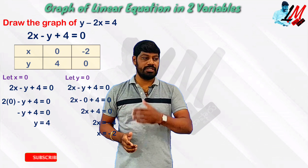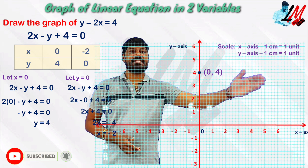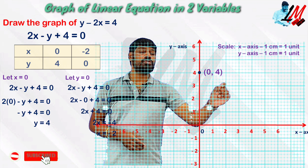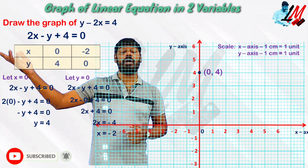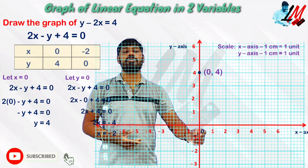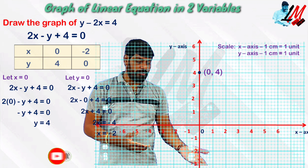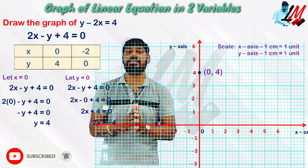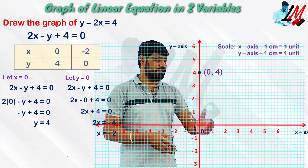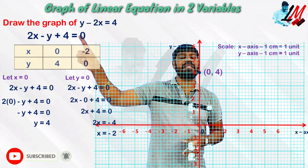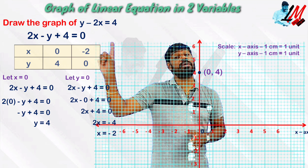So we get y equals 4, and separately when y equals 0, x equals minus 2. Now we already know that we have the x-axis and y-axis. We represent the scale on the x-axis, with 1 centimetre equal to 1 unit. We consider the same scale for the y-axis, with positive and negative values on both axes — 0, 1, 2, 3 and negative values as well.